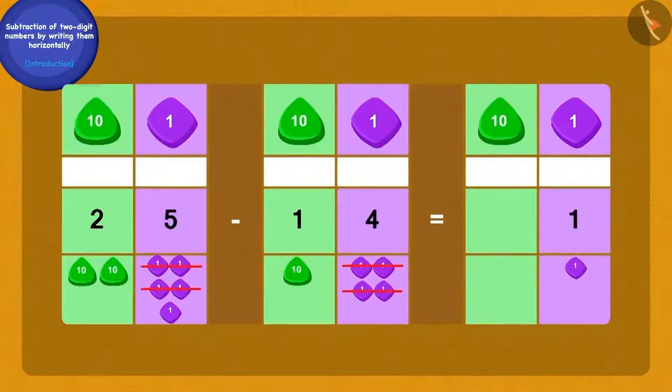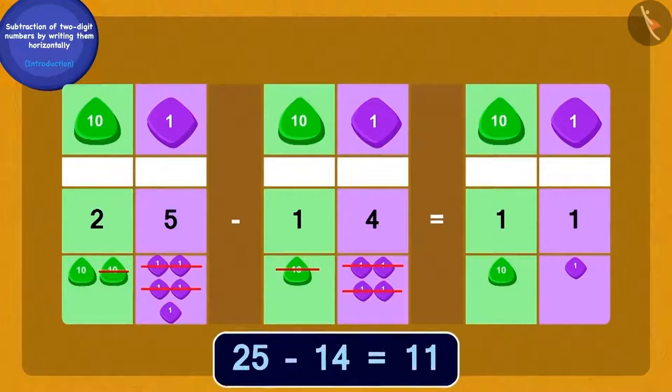1 one. And now, what should we do? Absolutely correct. If we subtract the 1 tenth of 14 from the 2 tenths of 25, then how many tenths will we be left with? 1 tenth. In this way, Chanda's yellow flower garland has 11 more flowers than her garland of red flowers.